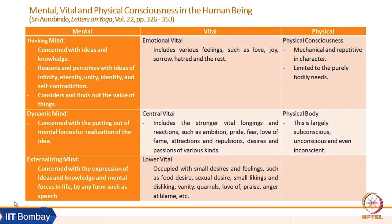Shri Aurobindo explained human existence or consciousness at five levels: Satchidanand, Supramental — which is reflected in the common human being in the form of mental, vital, and physical. The physical aspect of self is physical consciousness and physical body. Physical body is largely subconscious or sometimes unconscious; most of the time it works in a programmatic way. We are unconscious of what is happening in the liver, kidney, or most organs. Physical consciousness is more mechanical and repetitive in character and is limited to body needs.